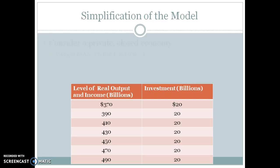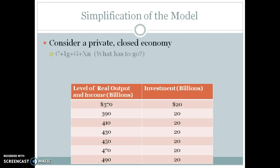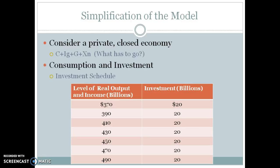When we first look at the aggregate expenditure model, we simplify it by looking at a private closed economy. Using the expenditure approach formula — consumers, investment, government, and net exports — in a private closed economy, we remove net exports and government spending. That leaves us with consumption and gross investment.